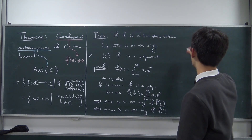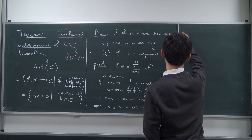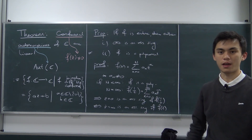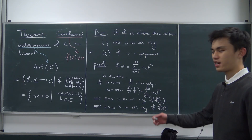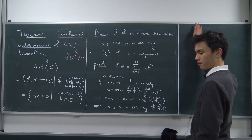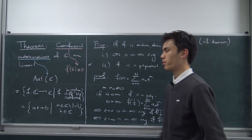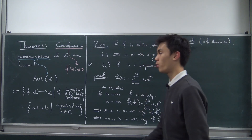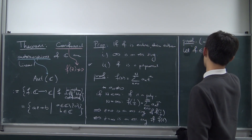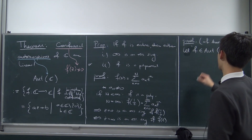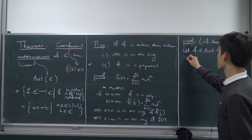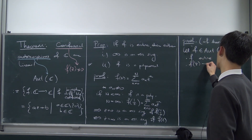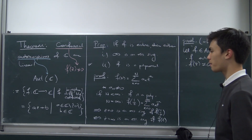Alright, that's the proposition done, and now onto the actual proof of the theorem. This is going to be a proof by contradiction: we're going to assume that F has an essential singularity and show that the function fails to be bijective using the Casorati-Weierstrass theorem. So first, suppose we pick a function F from Aut(ℂ). We know that F is entire, and we also know that F′(z) is not equal to zero because it's a conformal map.